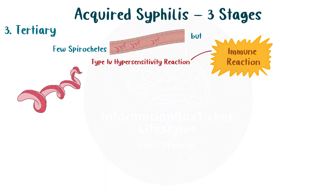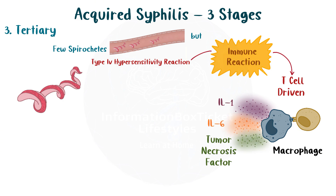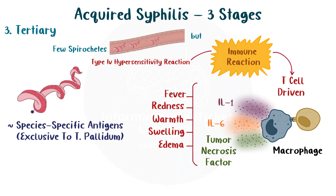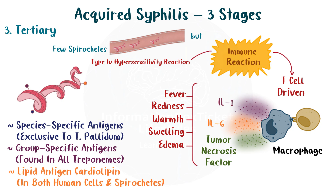A type IV hypersensitivity reaction is seen in tertiary syphilis, indicating a T-cell-driven immune response that recruits macrophages and other phagocytes and releases pro-inflammatory cytokines such as IL-1, IL-6, and tumor necrosis factor. This results in systemic symptoms like fever, as well as localized signs like redness, warmth, and swelling, or edema. T. pallidum has three main antigens: the species-specific antigens exclusive to T. pallidum, the group-specific antigens found in all treponemes, and the lipid antigen cardiolipin, which is found in both human cells and spirochetes.